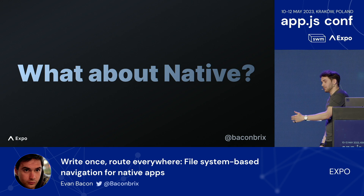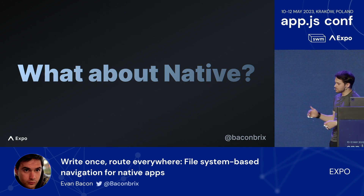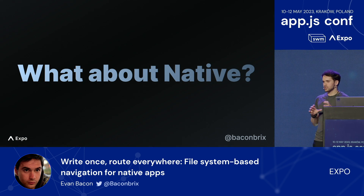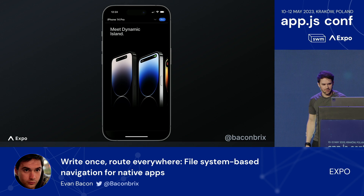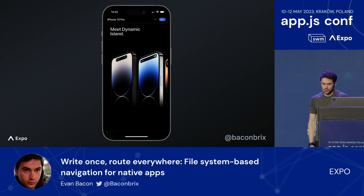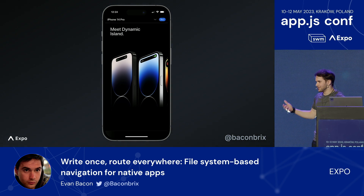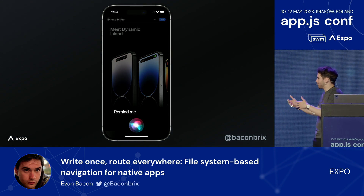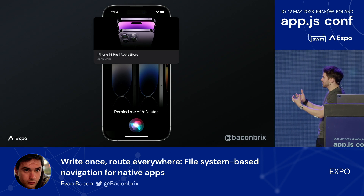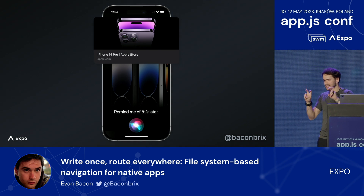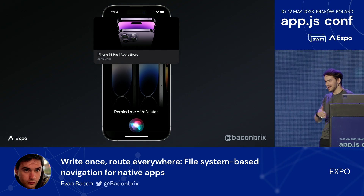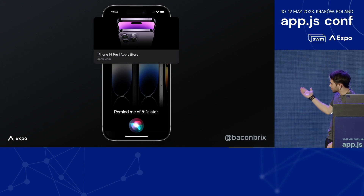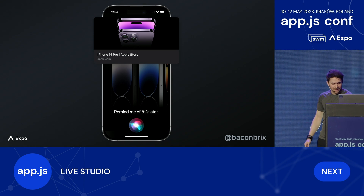Our head element goes even further than the web. When Expo Head is used with universal links, it brings native Safari features to any iOS app. For example, you can look at any page inside of your Expo Router application when using the new head element and say 'Hey Siri, remind me of this later,' and it will intelligently create a new reminder because it knows what the page is — there's a URL registered at any time. So users can effectively save state and then rehydrate that state later. It's automatic accessibility.